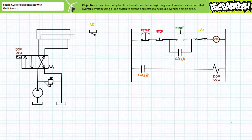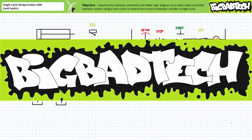I think we've squeezed just about every teaching moment out of this circuit that we possibly can. In conclusion, we examined both the hydraulic schematic and ladder logic diagram of an electrically controlled hydraulic system executing a single cycle reciprocation making use of a limit switch. Additionally, we examined some hypothetical troubleshooting scenarios and discussed possible sources of and solutions to these problems. Remember to review this material as often as you need to really drive it home. Imagine how well lab will go if you know what you're doing. Thank you very much for your attention and interest, and we'll see you again during the next lecture of our series. Remember to tell your lazy lab partner about this resource and be sure to check out the Big Bad Tech channel for additional resources and updates.